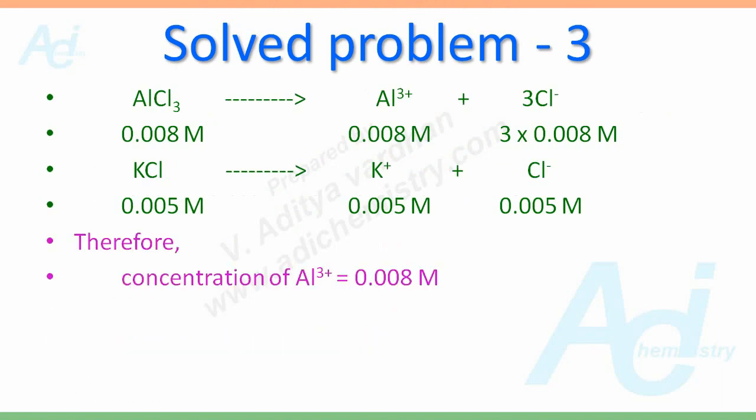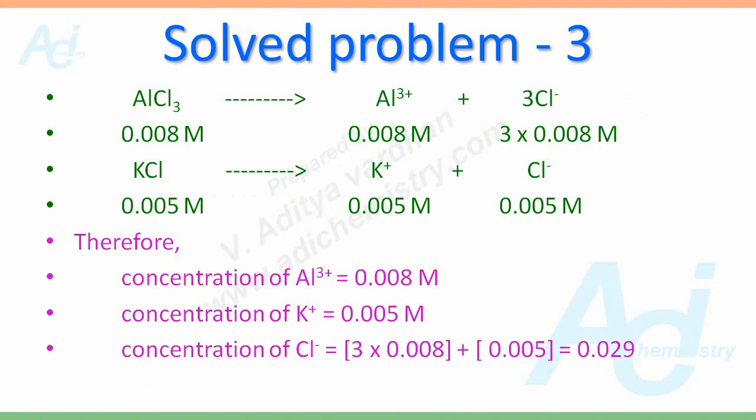Now the concentration of Al3 plus is 0.008 molar. For K plus it is 0.005 molar. But look at Cl minus. The Cl minus ions are contributed not only by AlCl3 but also by KCl. So we have to take the sum of the concentrations. So here 3 into 0.008, this is the contribution from AlCl3, plus 0.005 molar, this is the contribution from KCl. So the result is 0.029 molar for Cl minus ions.